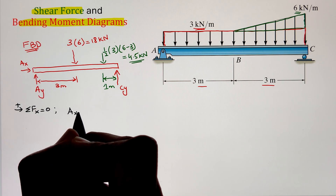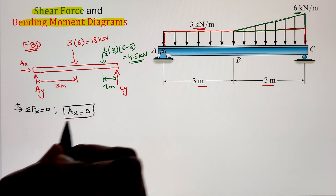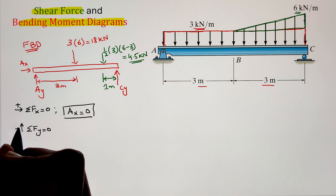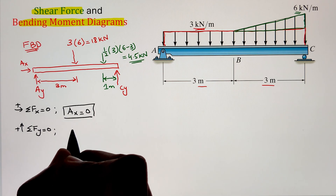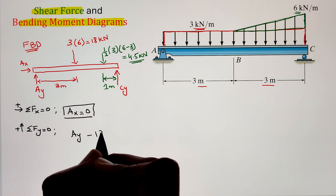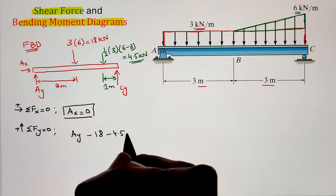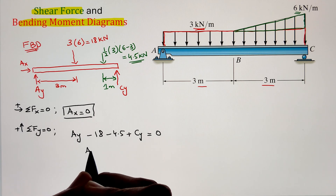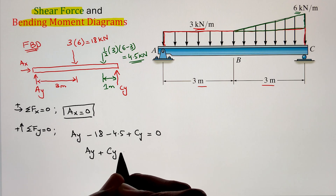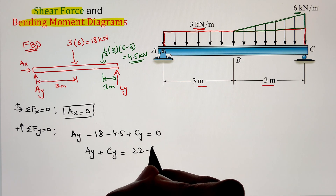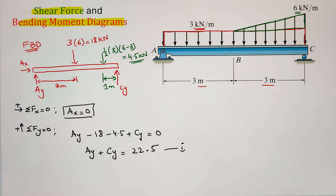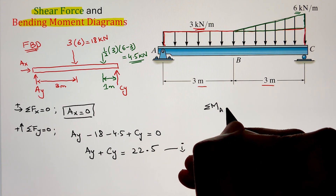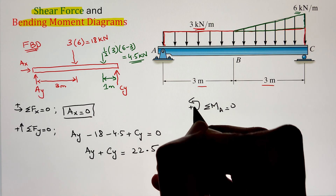Applying equilibrium equations: summation of forces in the horizontal direction equals zero, giving Ax = 0. Summation of forces in the vertical direction equals zero: Ay minus 18 minus 4.5 plus Cy = 0, which gives us equation one.